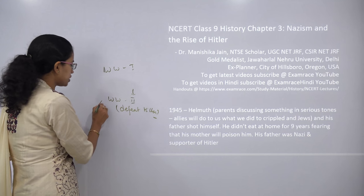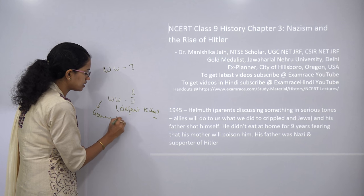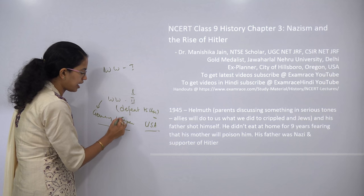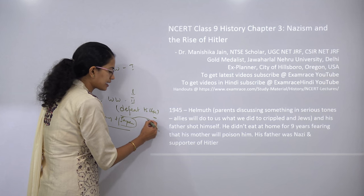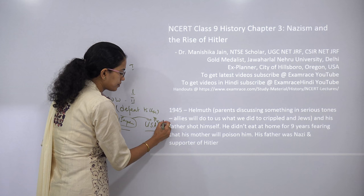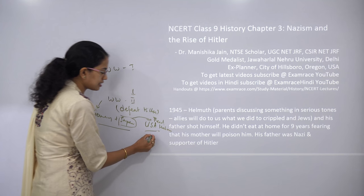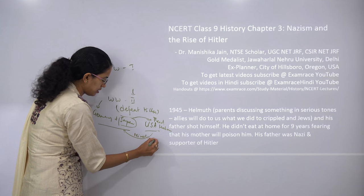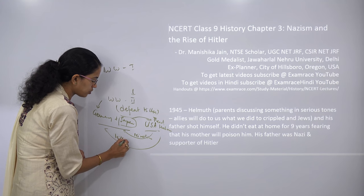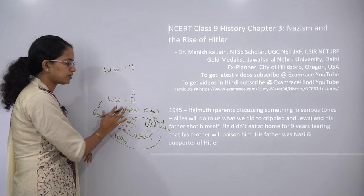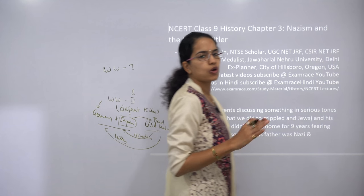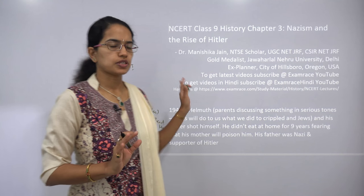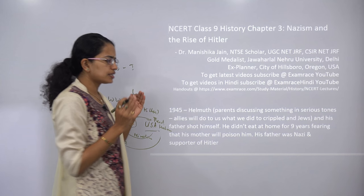During World War II there was a separation of power between the Allied and Axis forces. During that time Japan attacked Pearl Harbor port in the United States, and as a result Japan witnessed a nuclear bomb in Hiroshima. The defeat of Hitler was also a result of these developments, which finally led to the breakdown of Japan and Germany after World War II.